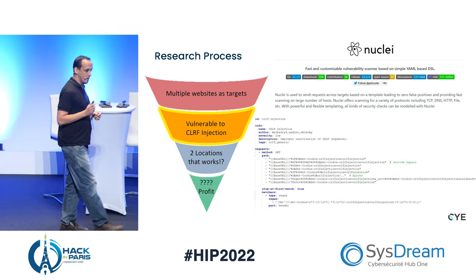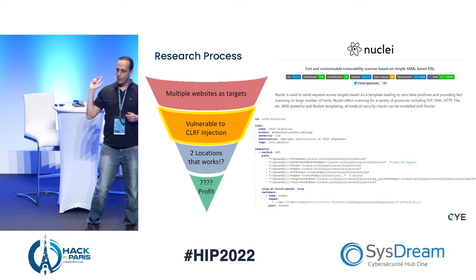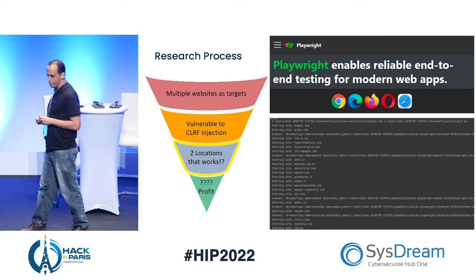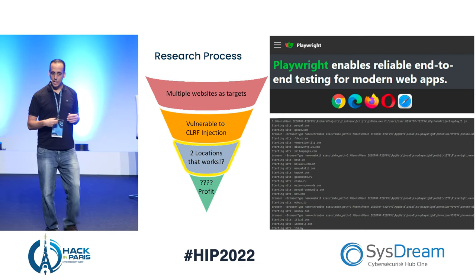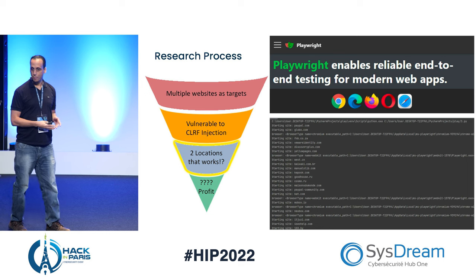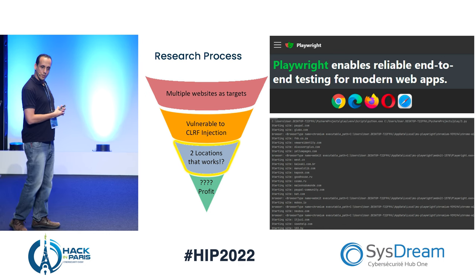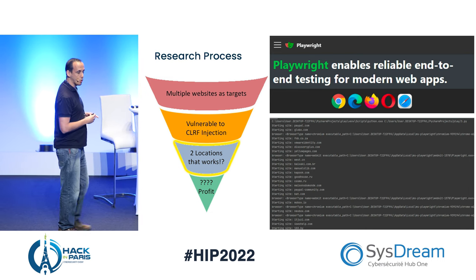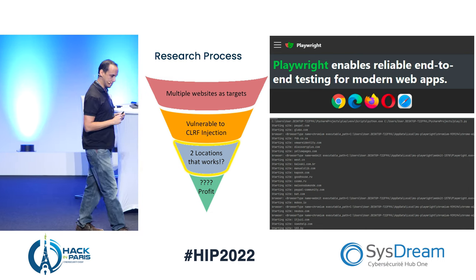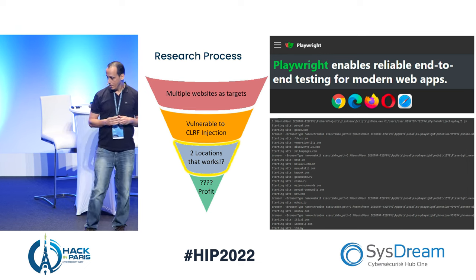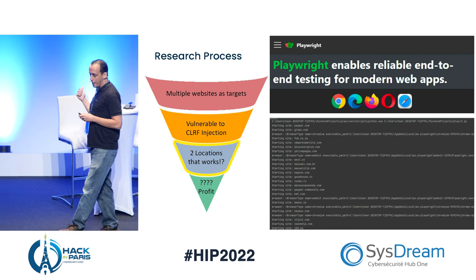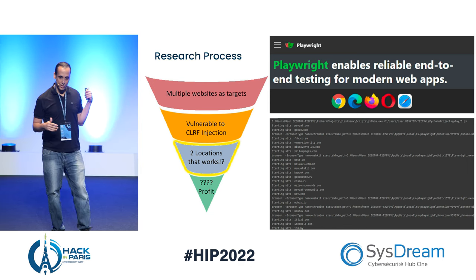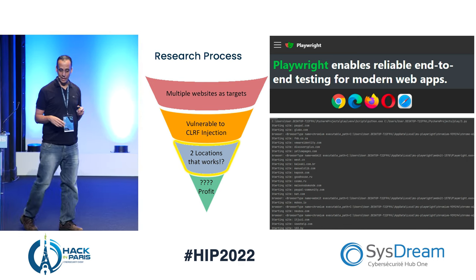So he was searching for CRLF injection using one of the community templates. Then he used Playwright, a very nice framework by Microsoft — you also have Puppeteer by Google — which enables you to control a browser programmatically, issuing commands like 'follow this URL', 'click this button', or 'fill this field'. He was using Playwright to check for cases where CRLF injection with two locations actually works.